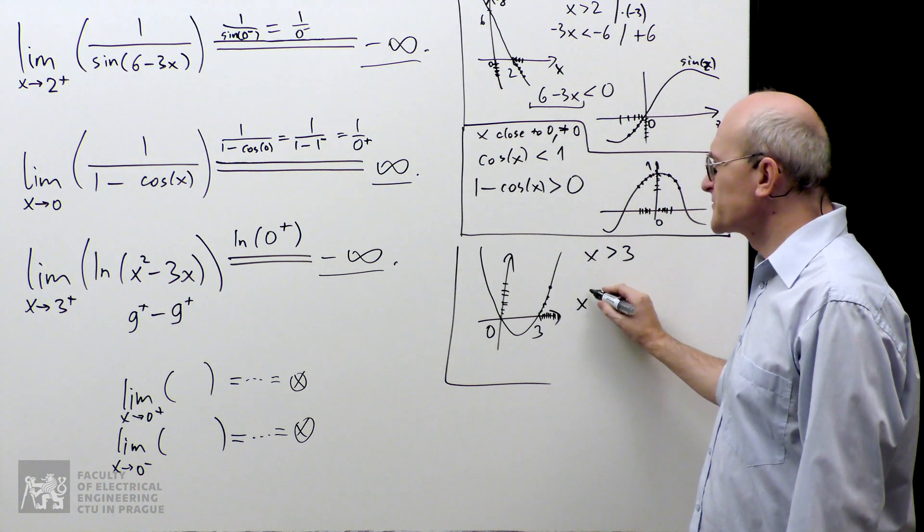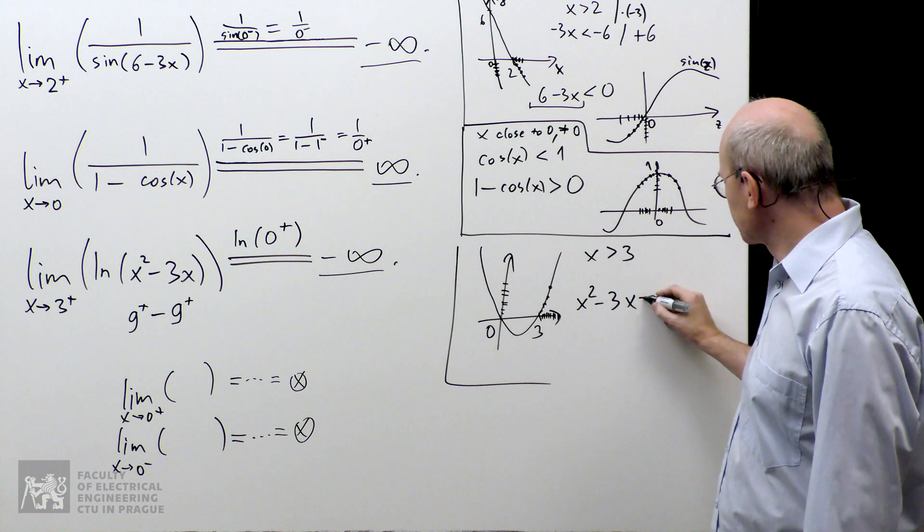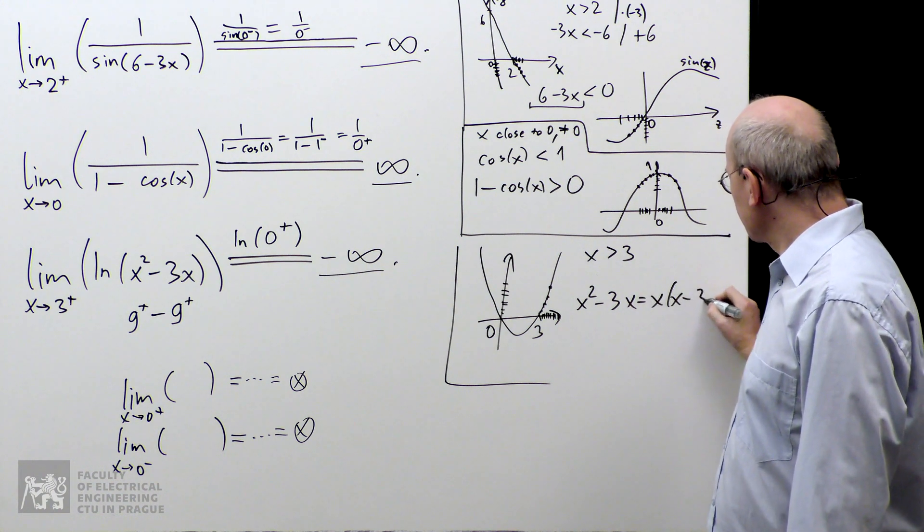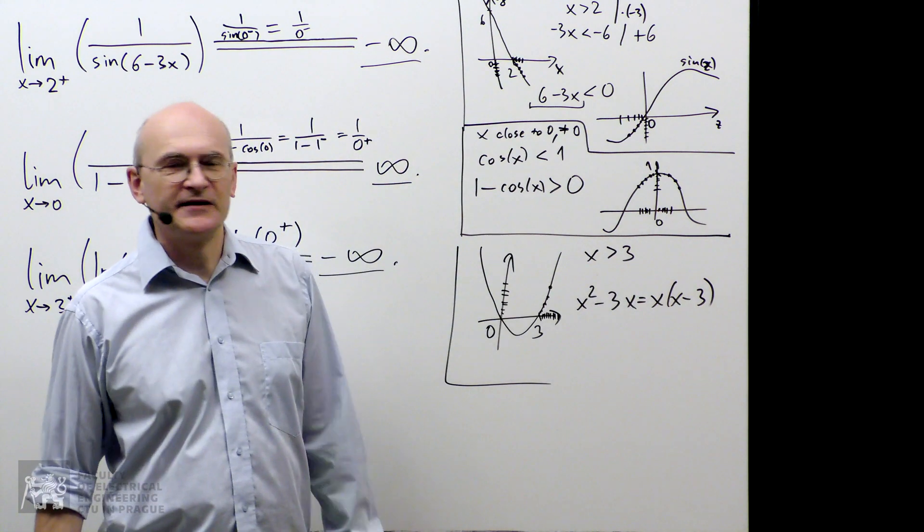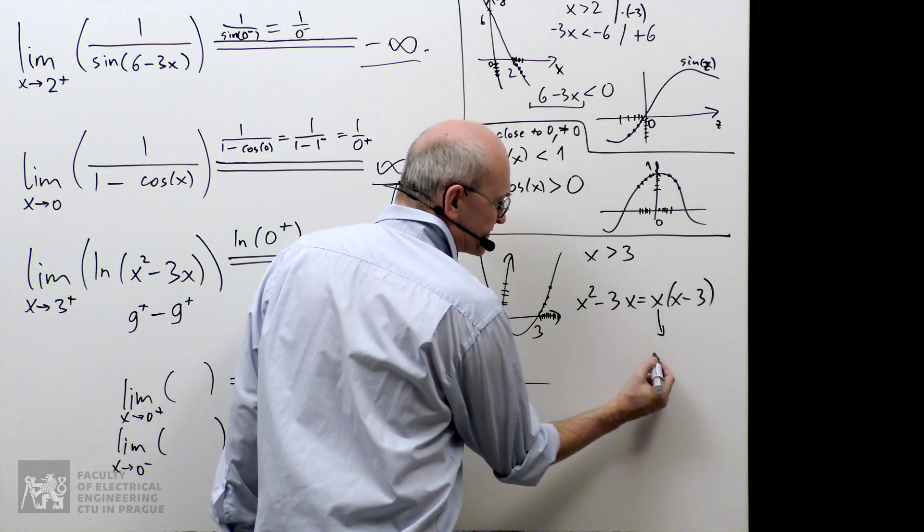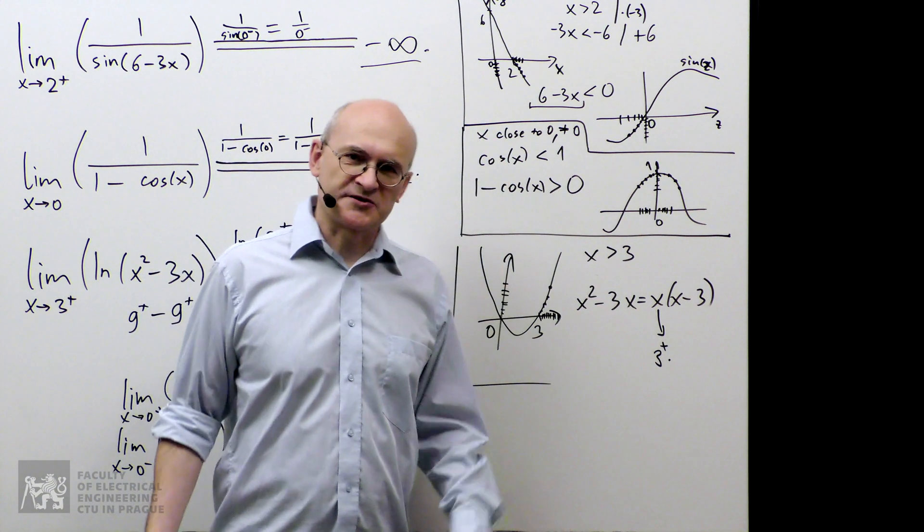I look at x squared minus 3x. And I factor out. And I look at the expression x times x minus 3. Now, what happens if x actually approaches 3 from the right? Well, x goes to 3. That's obvious.